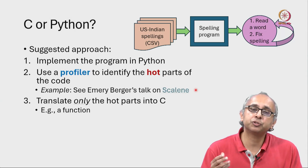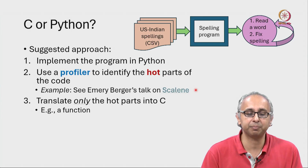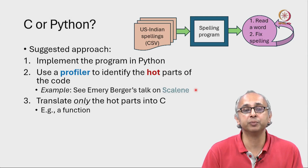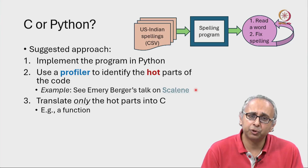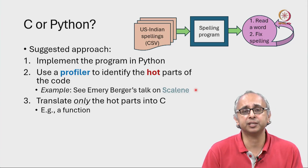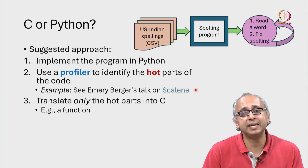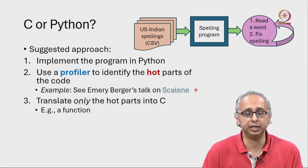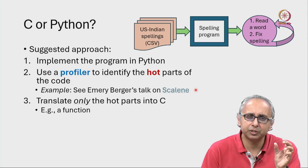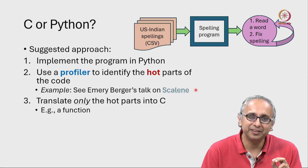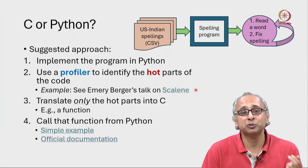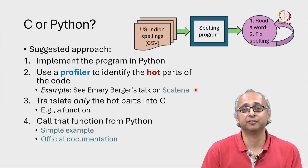Profilers will identify the regions of the code where a lot of time is being spent. Then you can try and make algorithmic improvements to that code if possible, and if those don't work then you can consider translating that code into C — specifically into a simple C function that you can call from within your Python code.